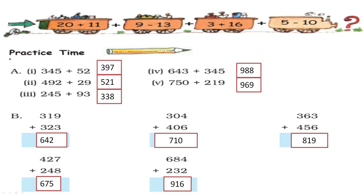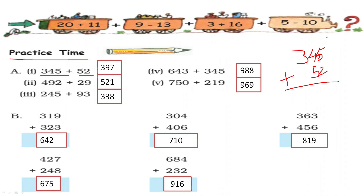Now let us see the practice time. We are going to add 345 plus 52. Write 345 plus 52, aligning by ones place, tens place, and hundreds place. 5 plus 2 is 7, 4 plus 5 is 9, and 3 plus 0 is 3. So 397 is the answer for the first one.